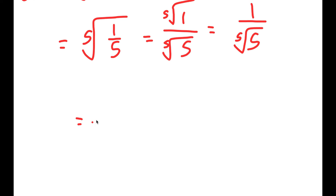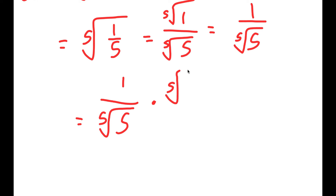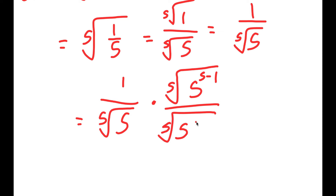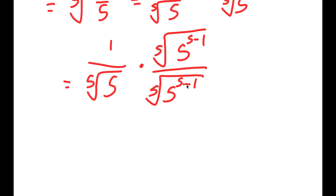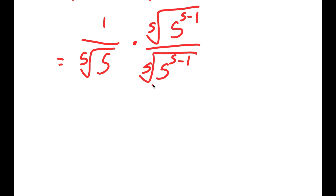Now, what I'm going to do is multiply this by the fifth root of 5 to the power of 5 minus 1, over the fifth root of 5 to the power of 5 minus 1. This equals 1, and the reason I'm doing this is to simplify the expression. So this is going to turn into the fifth root of 5 to the power of 4.